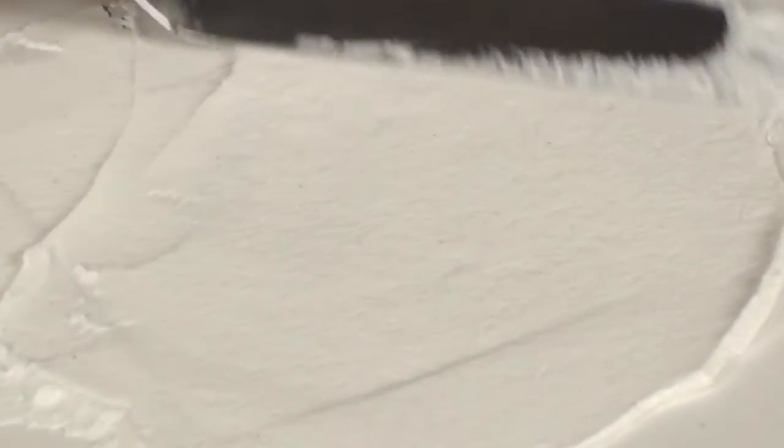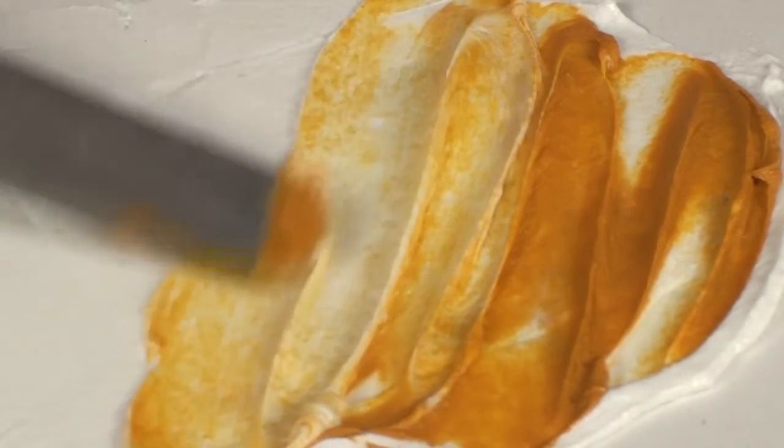The paste will have a somewhat gritty texture when you spread it around. Coarse molding paste is compatible with the entire range of Golden colors and mediums. It can be tinted to any color you choose.